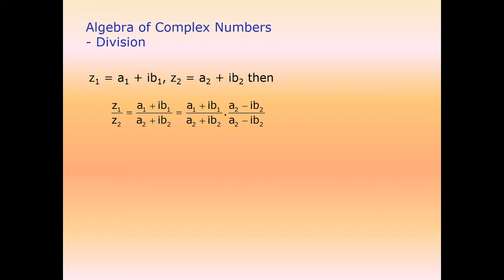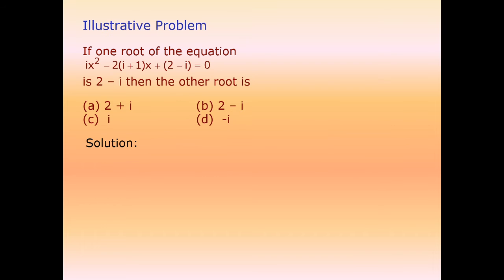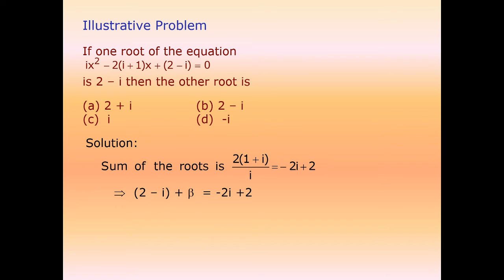For division of complex numbers, multiply the numerator and denominator by the conjugate of the denominator. Example problem: if one root of the equation x² - 2(1+iota)x + (2-iota) = 0 is iota, find the other root. Using the sum of roots formula, the other root is calculated to be -iota.